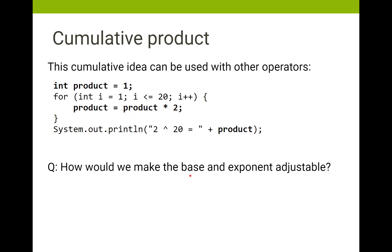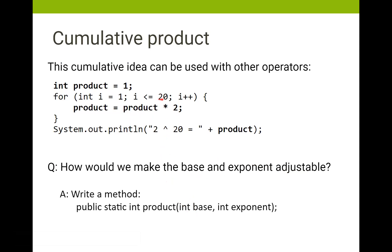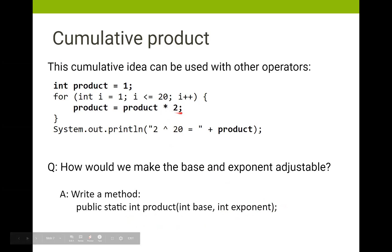If we wanted to change the base or the exponent, we could write a method called product. This part here is our exponent, and this value here is our base, so we pass in the base and the exponent as parameters — and that's how we make this method extensible.